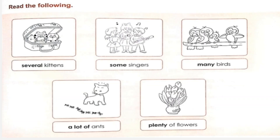Read the following: several kittens, some singers, many birds, a lot of ants, plenty of flowers. If you see, there are some words in bold. These are the words that you use for quantity — to define quantity.